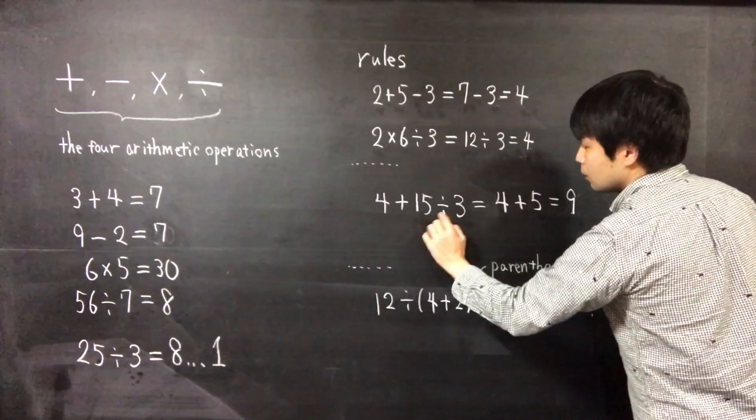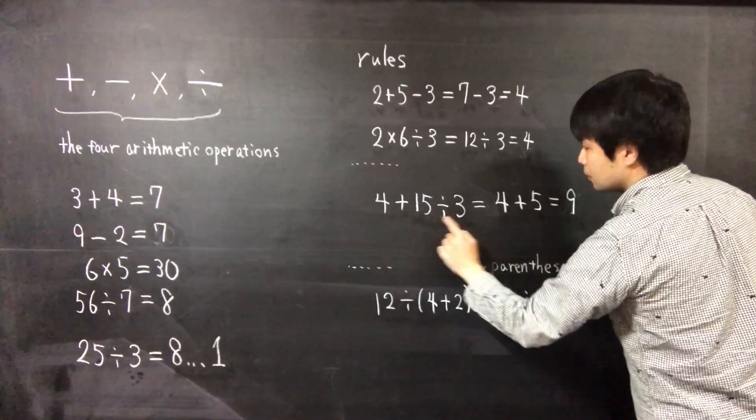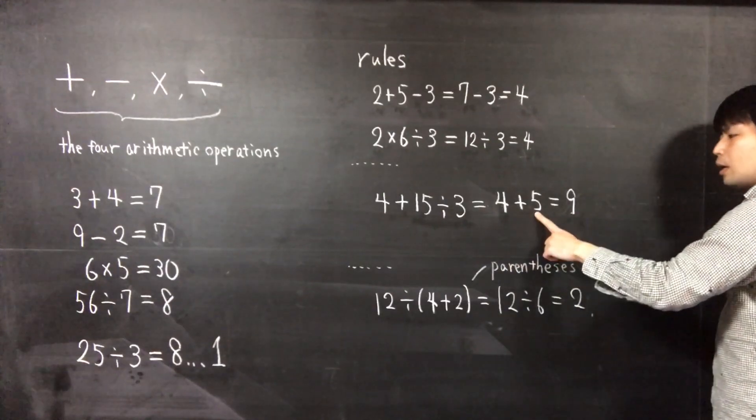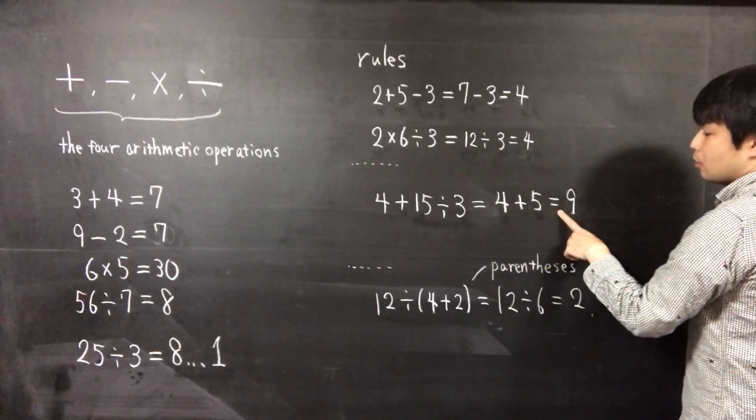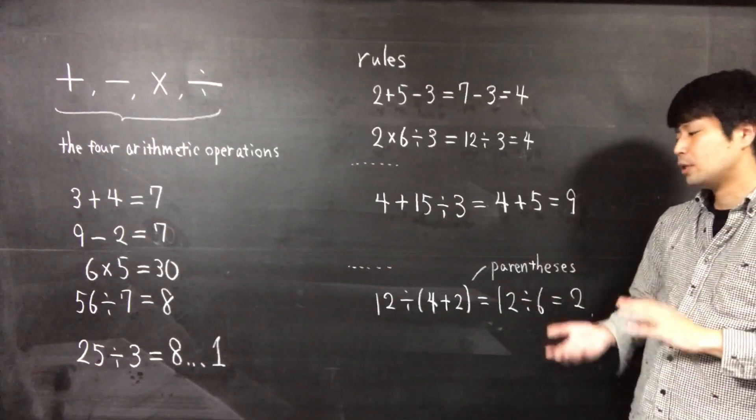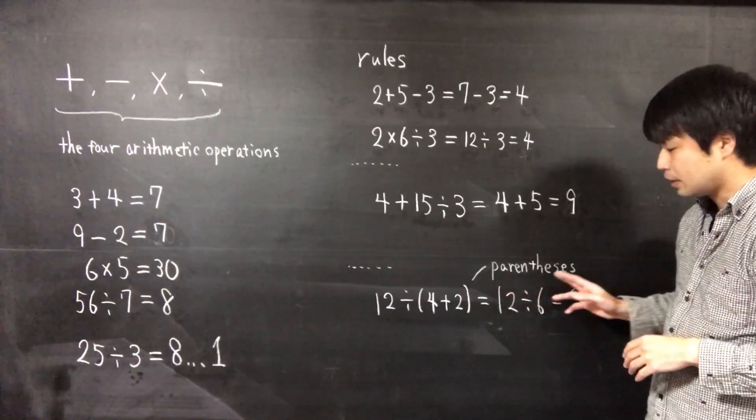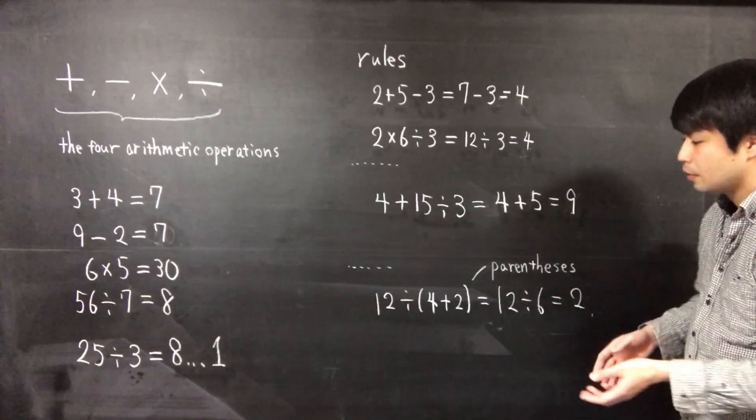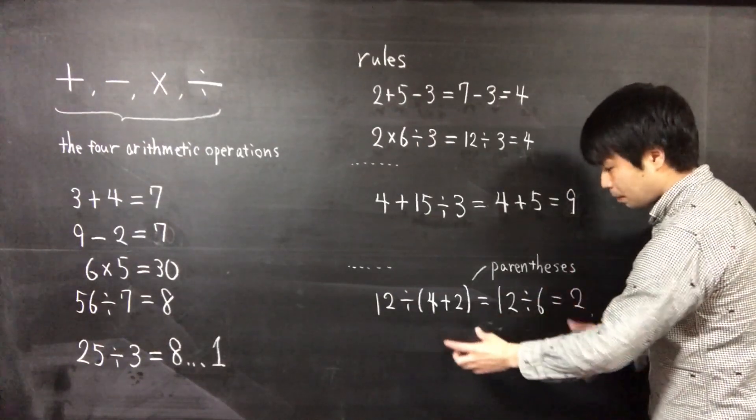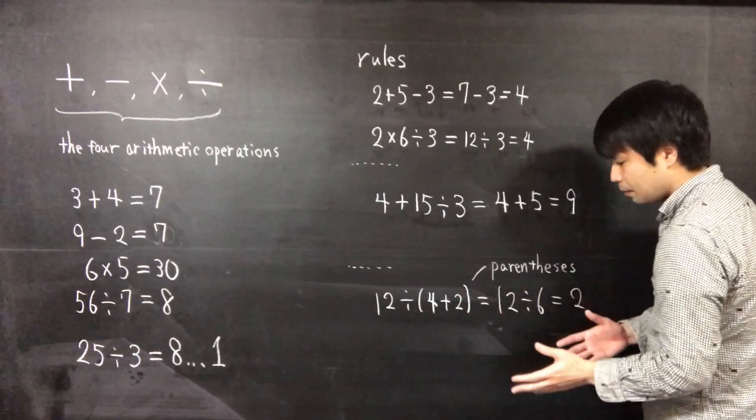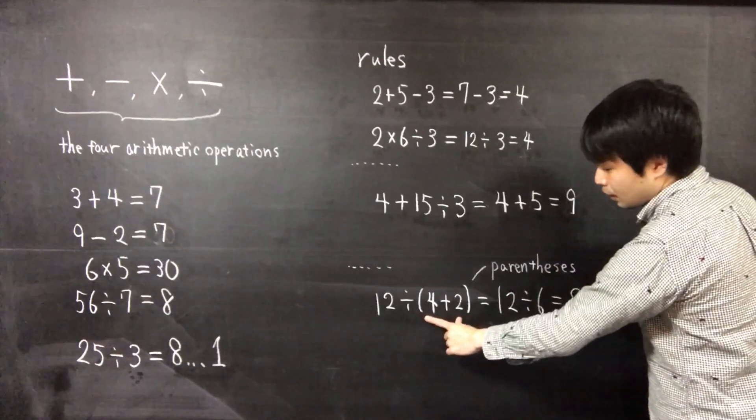When expressions have parentheses, we have to calculate within parentheses first. So 4 plus 15 divided by 3 is 4 plus 5, and 4 plus 5 equal to 9.